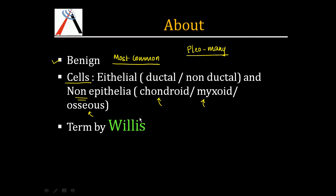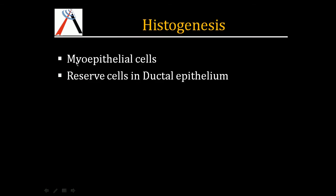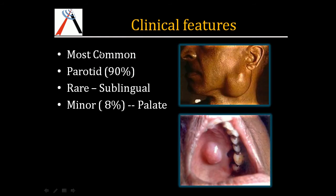The term pleomorphic adenoma was suggested by Willis. The most commonly recommended source of this tumor is the myoepithelial cells and the reserve cells in the ductal epithelium, although there has been some controversy regarding its histogenesis.